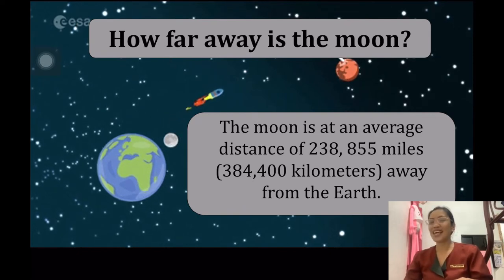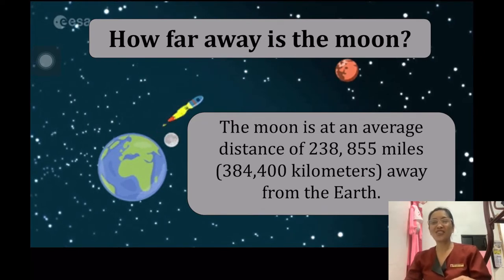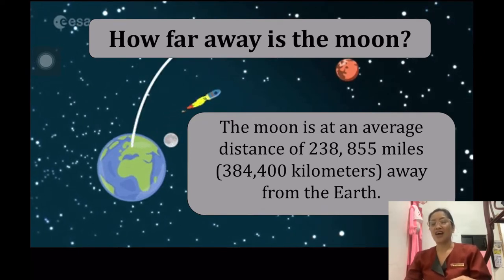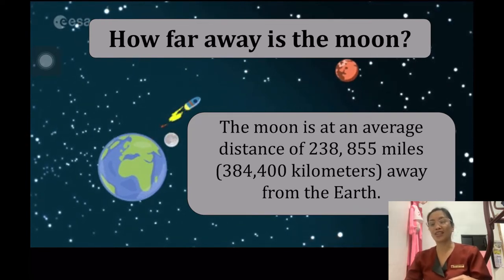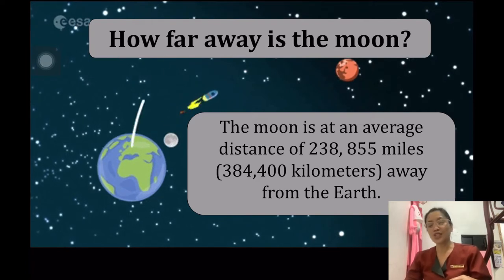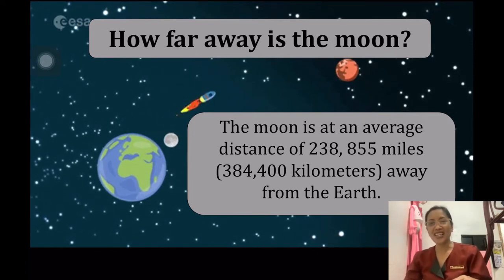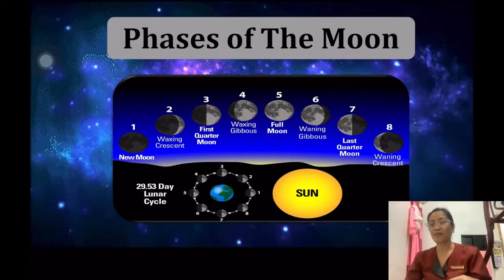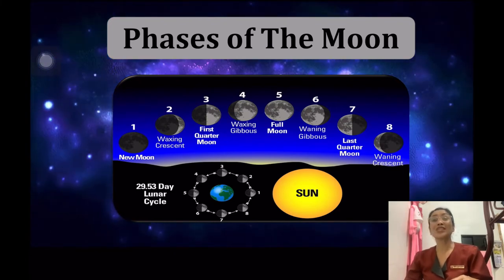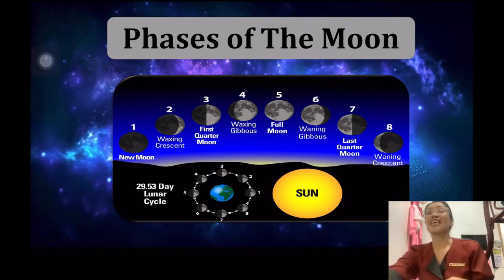Let's proceed to the next slide. Can you please read, Ella? The average distance between the Earth and the moon is 384,400 kilometers, equivalent to 238,855 miles. Any questions? Did you understand, class? Now, let's proceed to the next slide, which will be discussed by Ms. Carinal.